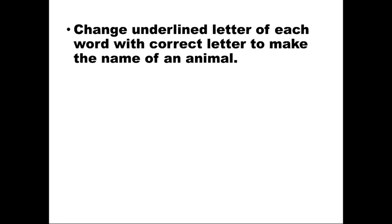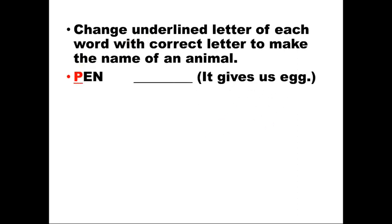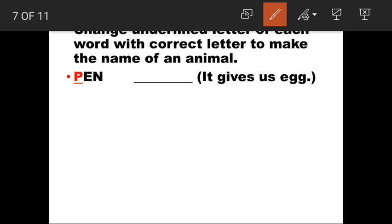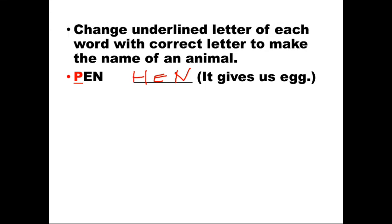Next: Change the underlined letter of each word with the correct letter to make the name of an animal. Clues are given. First word is 'pen' — P is underlined. Clue: it gives us eggs. If we change P to H, we get H-E-N — Hen. A hen gives us eggs. Very good.